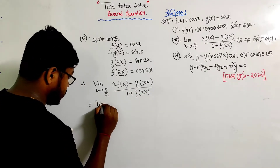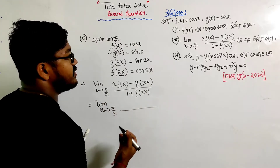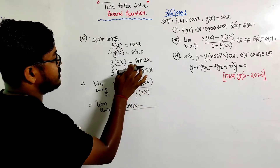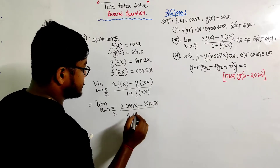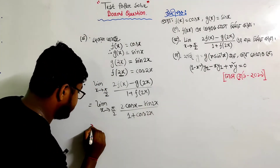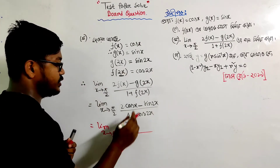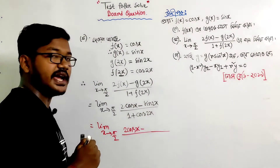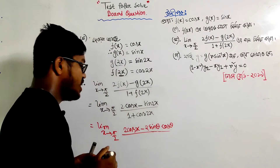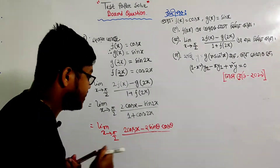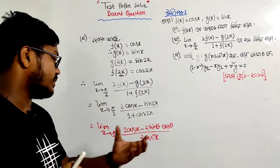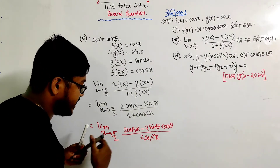So if we deal with the limit as x tends to pi by 2, then 2f(x) equals 2cos(x), minus g(2x) equals minus sin(2x), divided by 1 plus f(2x) equals 1 plus cos(2x). So we have 2cos(x) minus sin(2x) divided by 1 plus cos(2x).